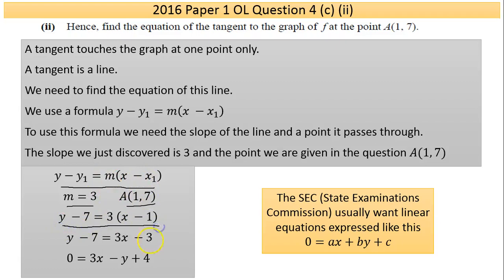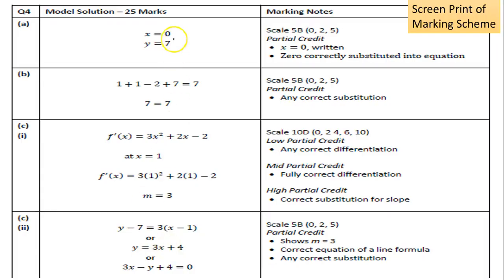Generally they want the answer expressed with everything on one side and the x term positive. Removing the brackets: y − 7 = 3x − 3. Bringing the y and −7 across the equals sign: +y becomes −y, and −7 becomes +7, giving −3 + 7 = +4. The final equation expressed in the form ax + by + c = 0 is 3x − y + 4 = 0.